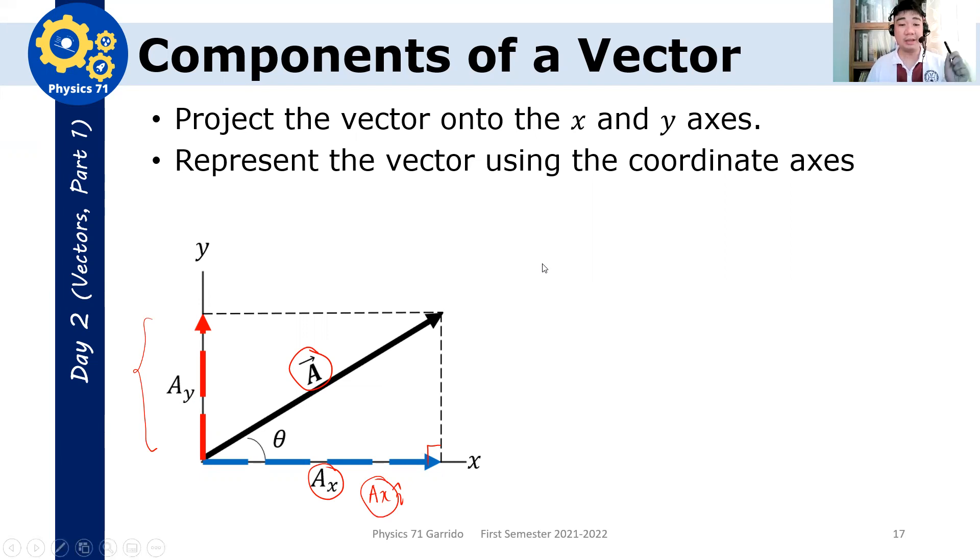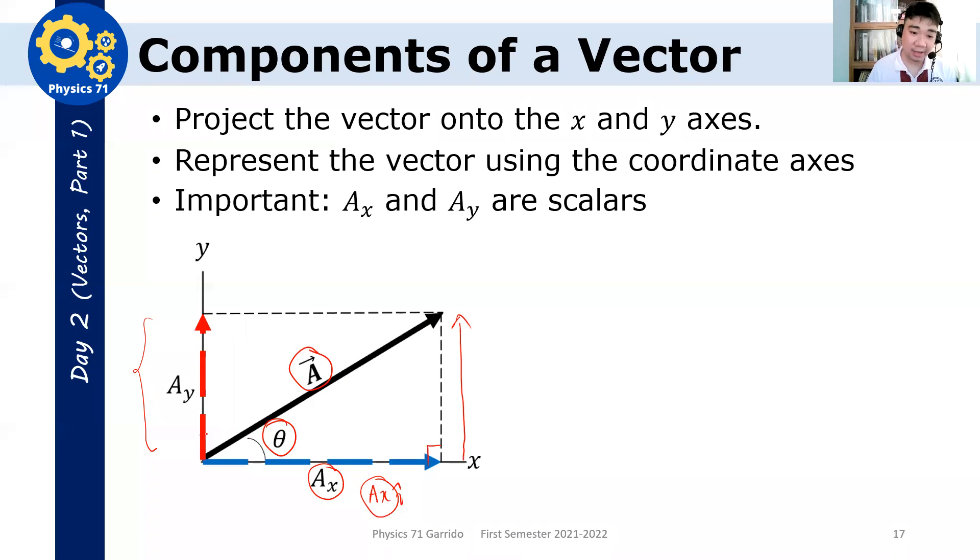So how do we specify ax and ay in terms of the magnitude of a vector, which is a? We will insert trigonometry. So, this is theta, and ax. From your Soh-Cah-Toa, ax is the adjacent angle. So, if the length of a, if this length here is a, then what will be the length of ax? It's a cosine theta.